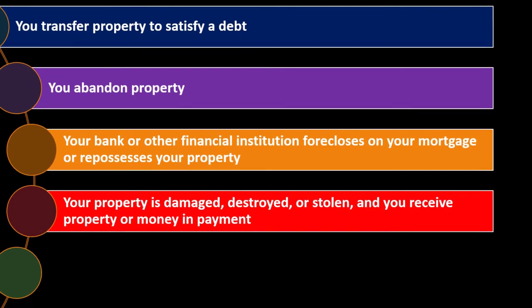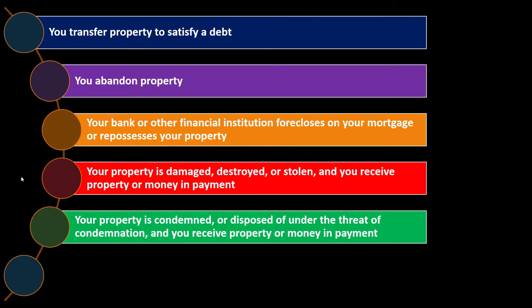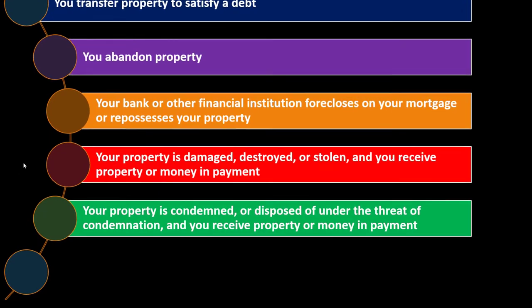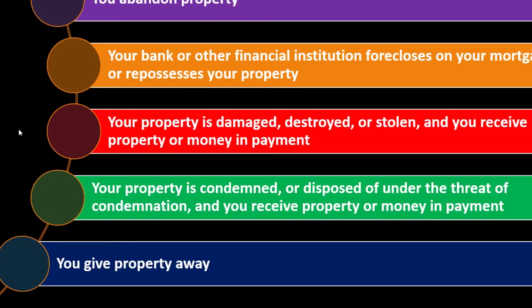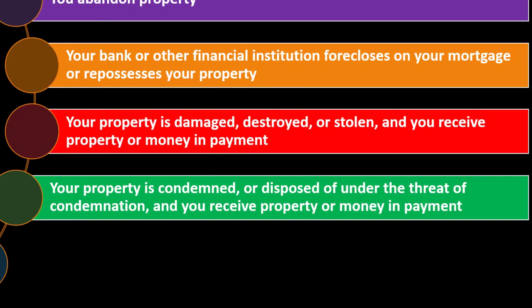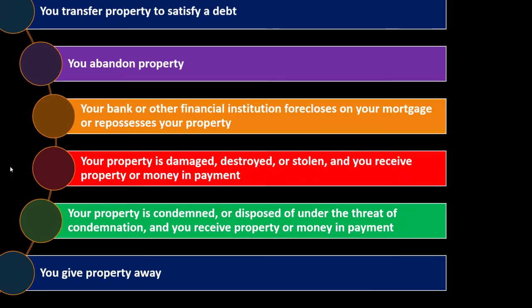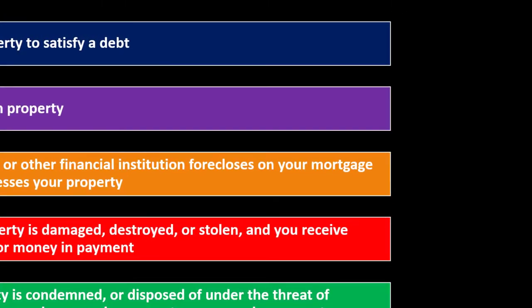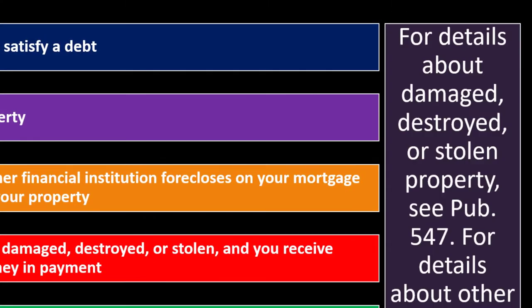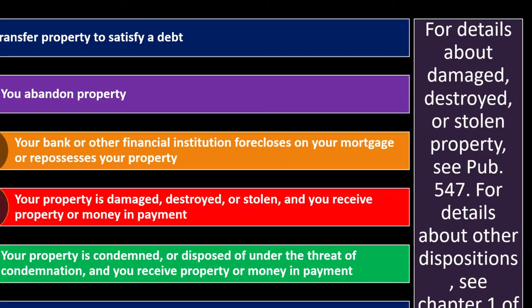When property is damaged or destroyed, you have to take it off the depreciation schedule, but you might have received insurance money — how do you record that? Your property is condemned or disposed of under the threat of condemnation and you receive property or money in payment. You give property away — in some cases that's still a disposition, and you at least have to take it off the books on the business side.